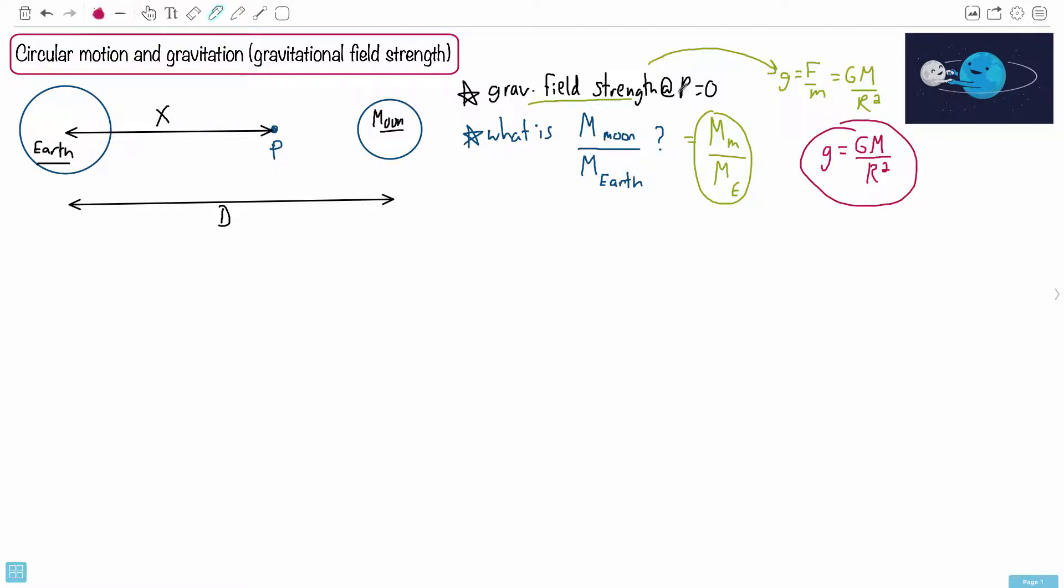But because we know the gravitational field strength at P equals zero, what that tells you is this. At this location right here, we've got this gravitational field strength, and they're going to be going in opposite directions here. We're going to have the gravitational field strength goes with the force. So this will be G Earth, and this here will be G Moon. And we know that G Earth and G Moon are going to cancel each other out.